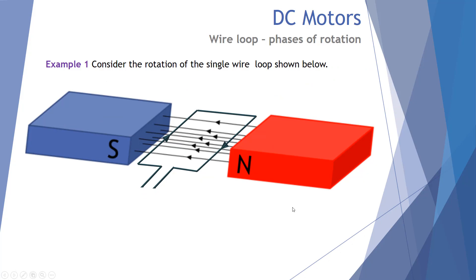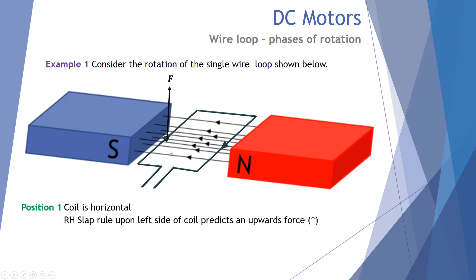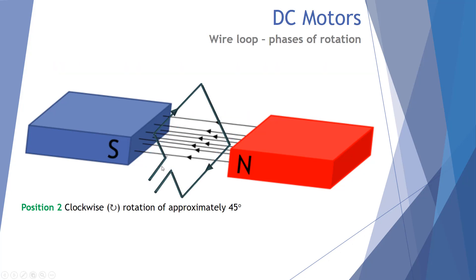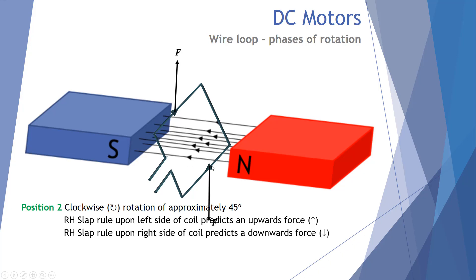Consider the rotation of a single wire loop. The coil is horizontal in position one. The right-hand slap rule generates an upwards force on the left side and a downwards force on the right side, generating a clockwise torque. In position two, after approximately 45 degrees of clockwise rotation, the top section still experiences a force up and the bottom section a force down, still generating a clockwise torque.